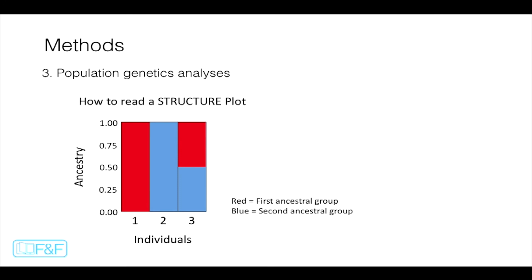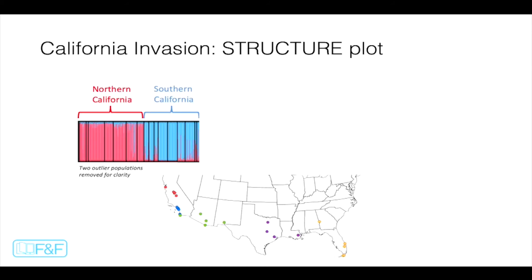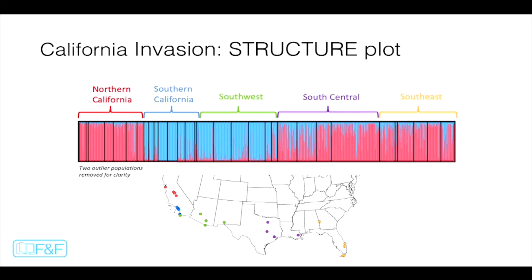The next step was to do population genetics analyses — sophisticated statistical analyses run on the computer. One I want to highlight is called a structure plot. Each individual is represented by a vertical bar, and the color of that bar represents what proportion of its ancestry comes from each ancestral group. So individual one is from the red group, individual two from the blue group, and individual three is a mixture of those two ancestral groups. When we look at a structure plot for California, we see two really clear ancestral groups emerge. Looking at the rest of the country, Northern California is most closely related to South Central and Southeast United States, whereas Southern California is more closely related to the Southwest.